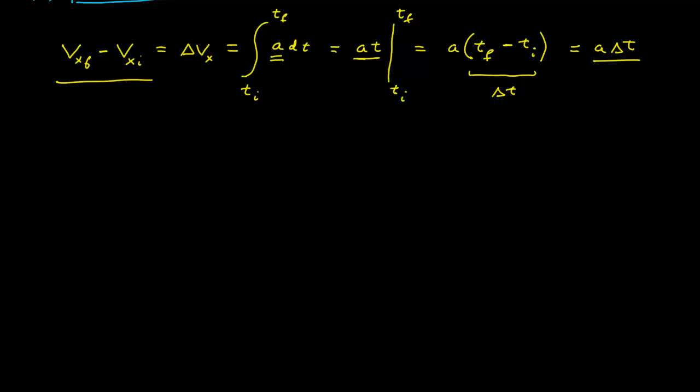So I can combine those two to give me a new expression, a relationship which says the final x component of the velocity is equal to the initial component of the velocity plus acceleration times the time interval between these two points.